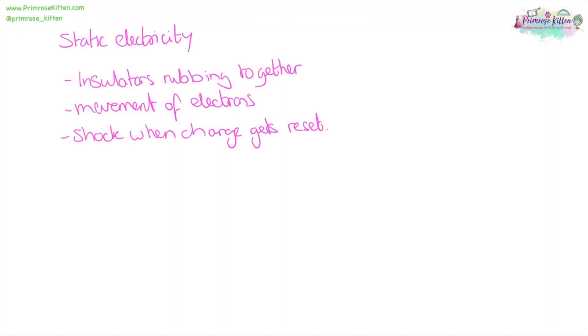When we have static electricity, we have an object that isn't normally charged becoming charged. That happens when two insulators rub together. This is caused by the movement of electrons from one thing to another thing. You're going to get a shock when the charge is reset and when you touch something metal. If you have two charged objects coming together, they're going to repel each other. Alternatively, if you have a charged object and an object which has the opposite charge, they're going to attract each other.